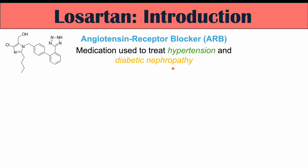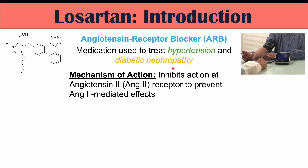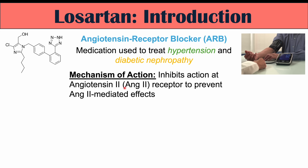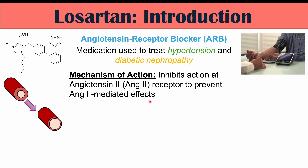Diabetic nephropathy is kidney disease from diabetes, and this is often going to be where we have proteinuria — so there's protein being excreted in the urine. Now the mechanism of action of Losartan is as follows: it inhibits action at angiotensin 2 receptors to prevent angiotensin 2-mediated effects, so it blocks the angiotensin 2 receptor and prevents angiotensin 2 from having an effect.